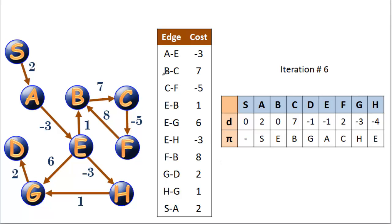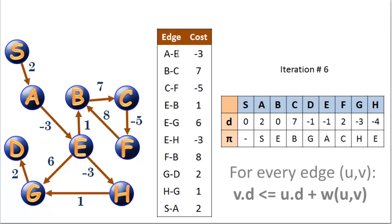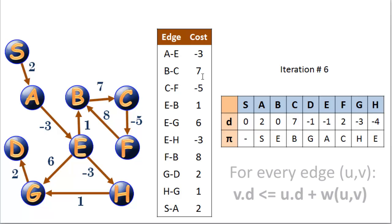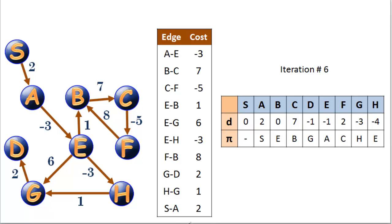We still have to understand how the negative cycle check is applied, because for larger graphs it won't be obvious. We go through each edge and verify that the cost to reach the destination is less than or equal to the cost to reach the source plus the edge weight. For example, the cost to get to E is negative 1, which must be less than or equal to 2 minus 3 — and they're equal. The cost to get to C must be less than or equal to 0 plus 7 — also equal. All edges check out, confirming no negative cycles and a valid solution.